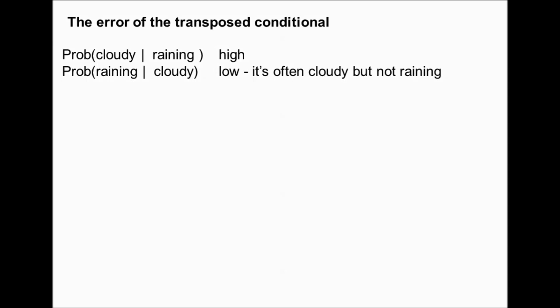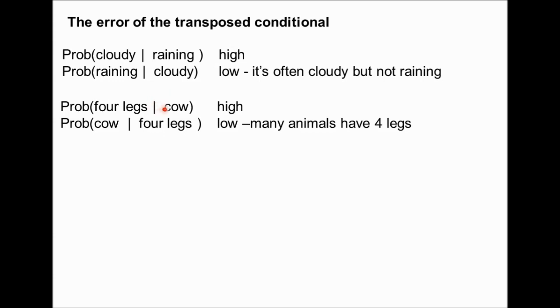Take a more stark example: the probability that you have four legs given that you are a cow is high — there aren't many three-legged cows around. In contrast, the probability that you are a cow given that you have four legs is much lower, because many animals have four legs but are not cows. Ask any dog. The denominator is correspondingly high and the probability is low.